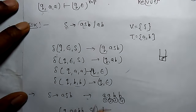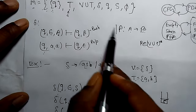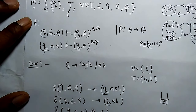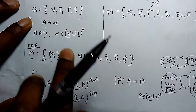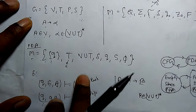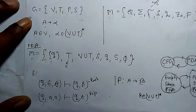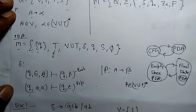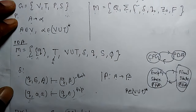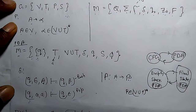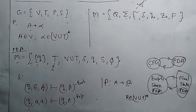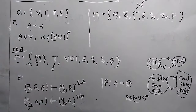So using this rule we can make an equivalent PDA for any context free grammar. This is the equivalence of CFG to PDA. Thank you.